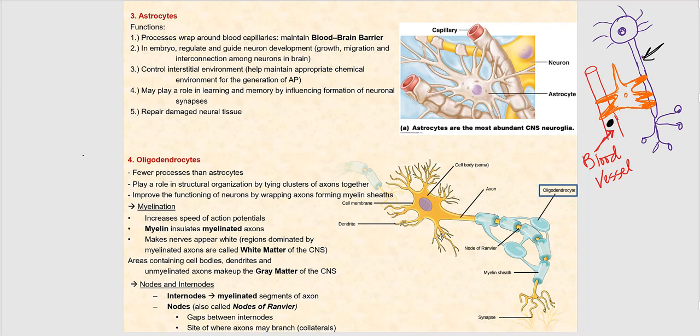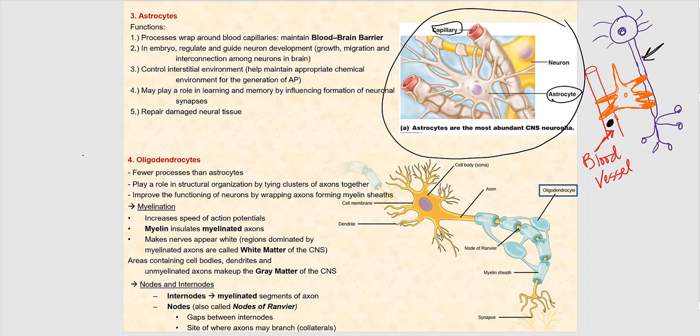This is what the blood-brain barrier is about — the astrocyte is literally the barrier between the blood and the neuron. You can see how the cytoplasmic extensions contact the blood vessel and contact the neuron, so anything in that blood has to go through the astrocyte first. There are exceptions, however — lipid-soluble substances easily pass through the astrocyte as if it weren't even there and can directly contact the neuron.